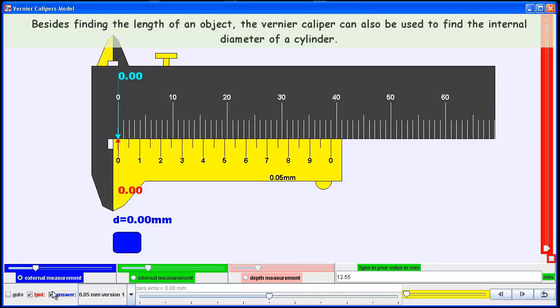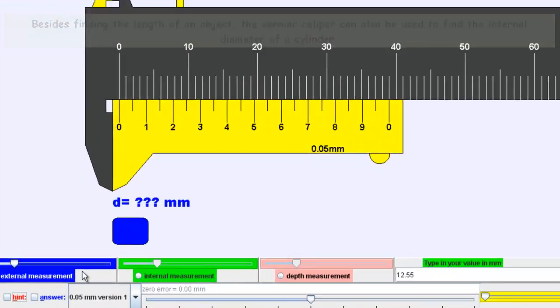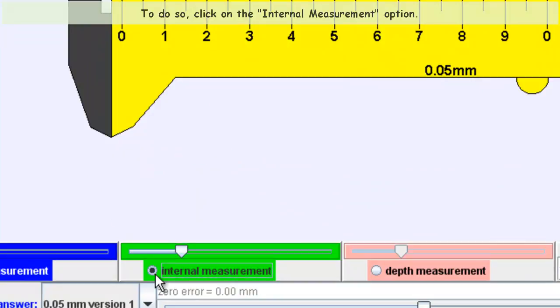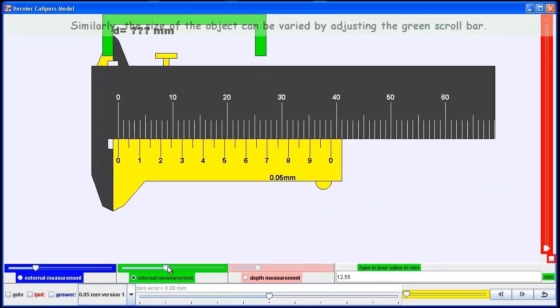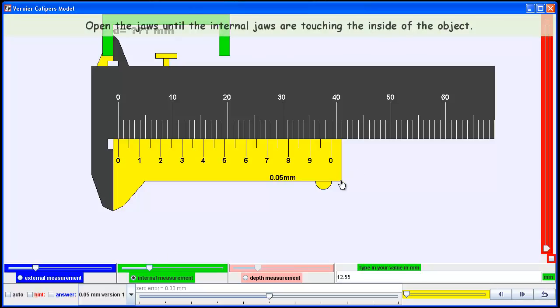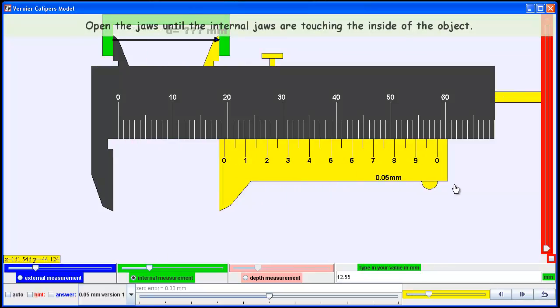This vernier caliper simulation also allows students to measure internal dimensions. In this case, you can use the same vernier caliper to take measurements of objects like a bowl.